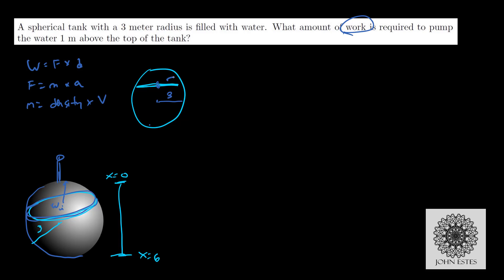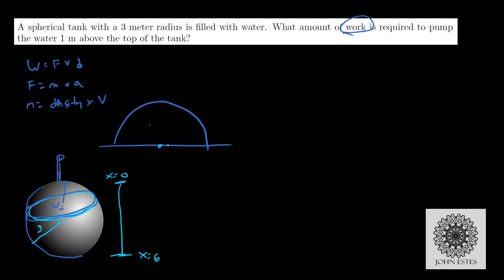Let me draw this a little larger so we can get a better picture. We don't really need the full sphere. So let's say here's our radius 3 and here's my cross section. I draw a line down — this is r — and I need to get r in terms of x. So where is x? Well, x is this depth, and so this length here is 3 minus x. And I can make a right triangle where I know that this hypotenuse, since it's a radius, is 3.